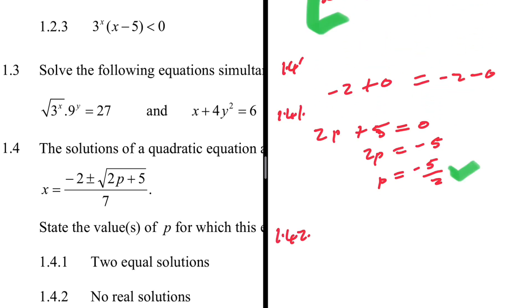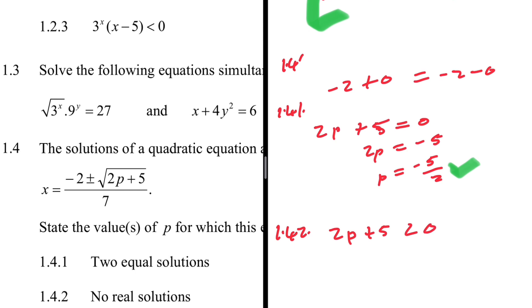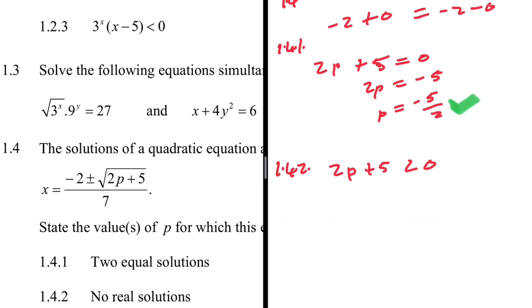For 1.4.2, no real solutions: the square root of a negative number is undefined, so we need 2p + 5 < 0. This gives 2p < -5, so p < -5/2.